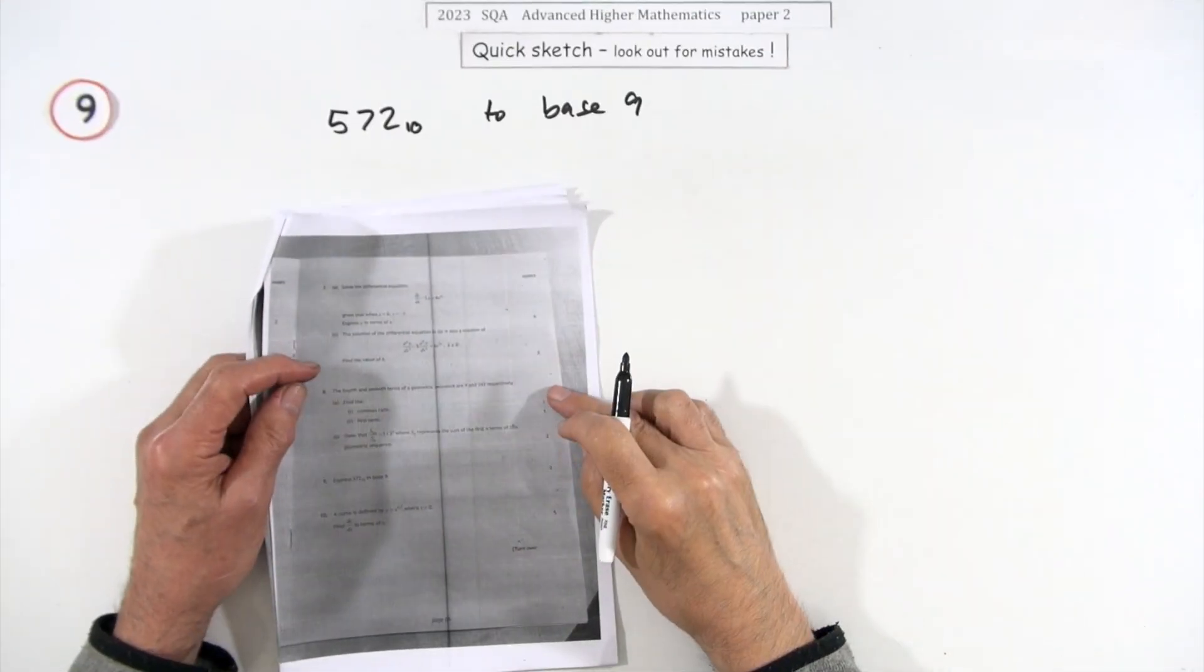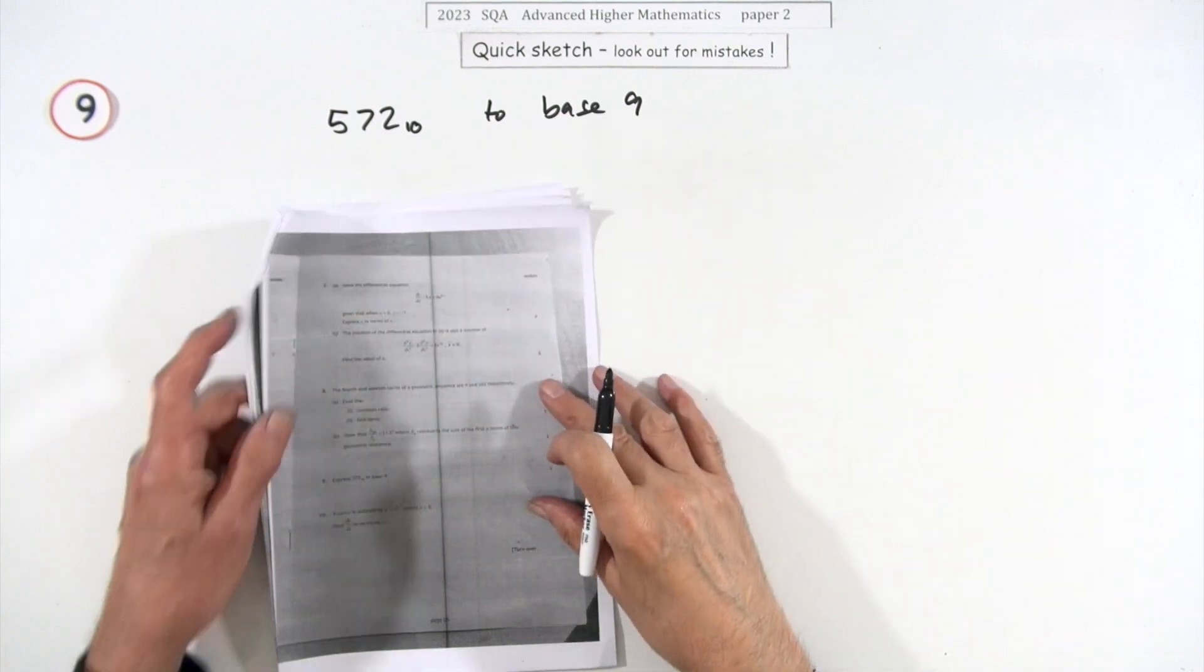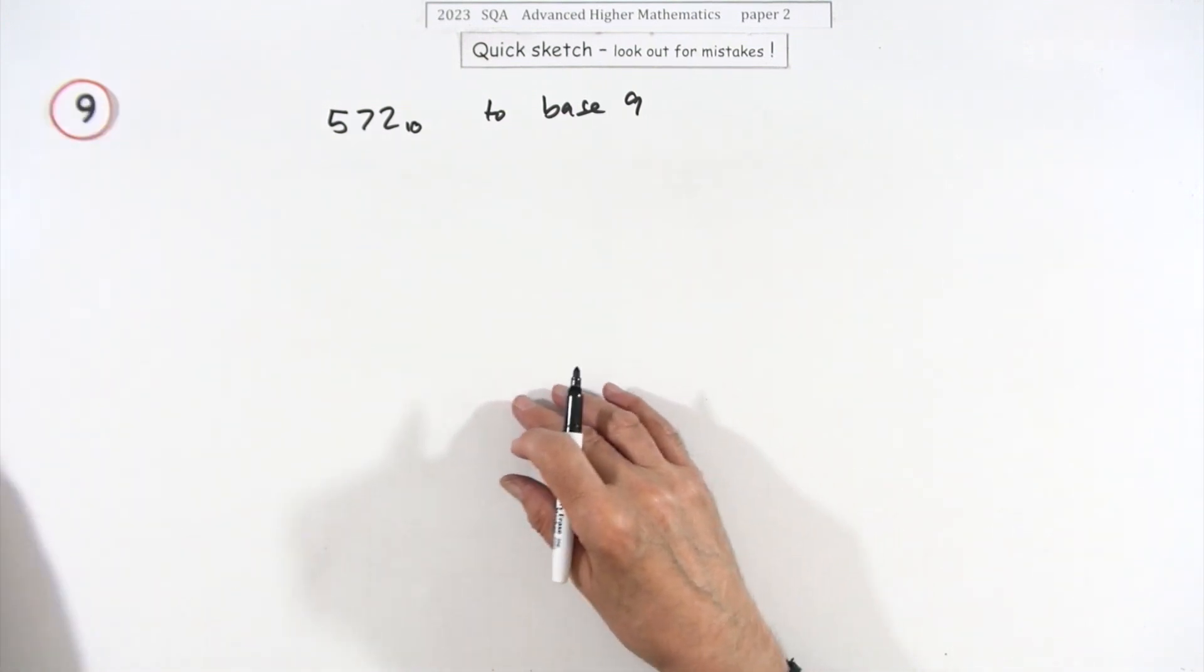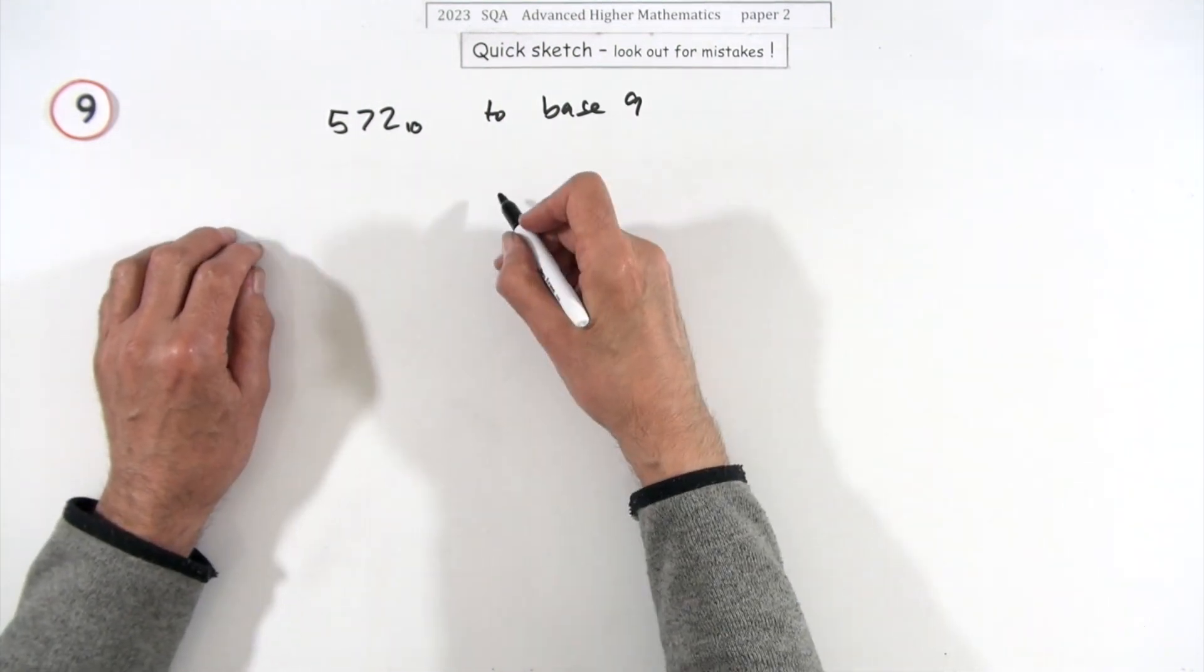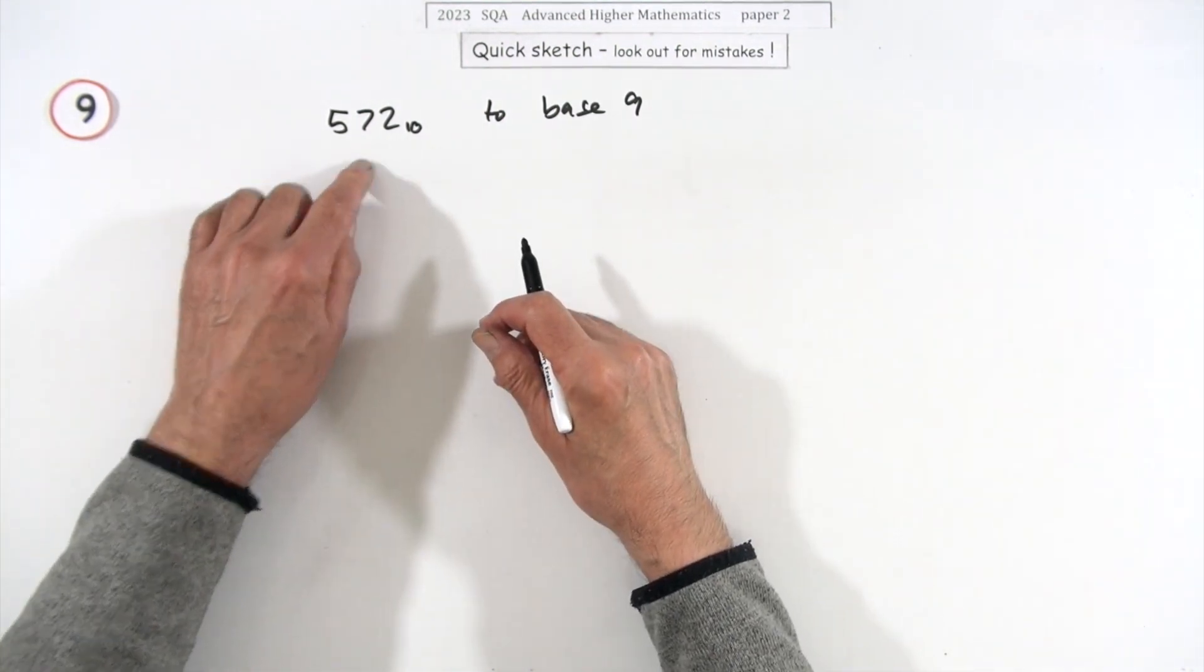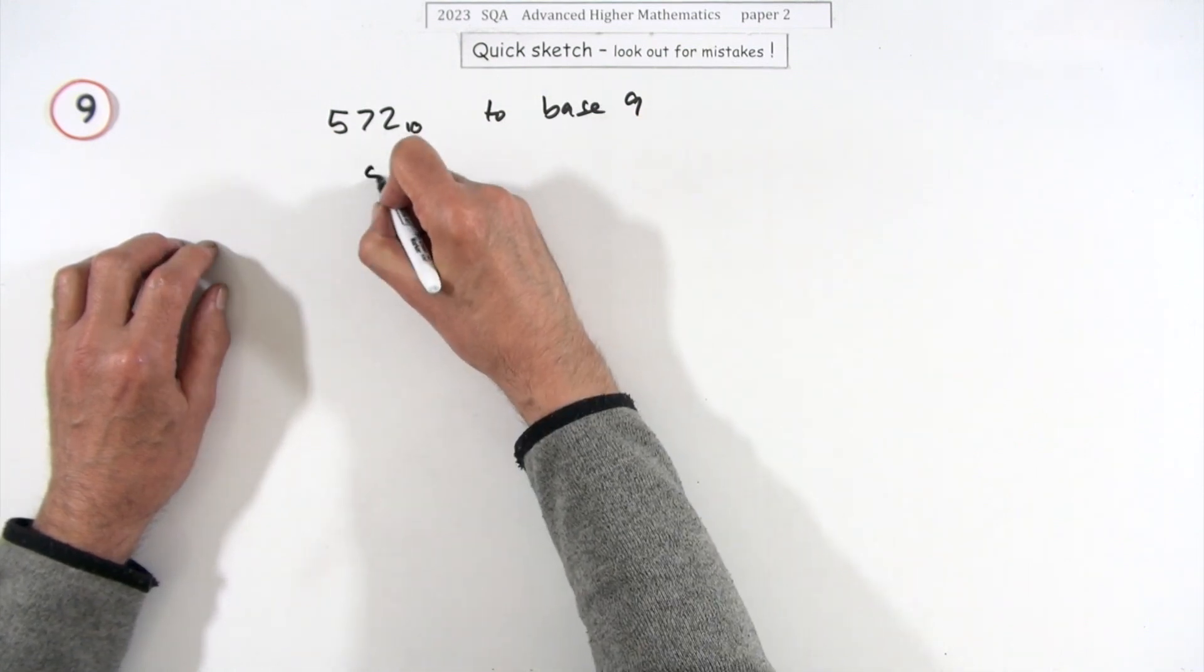Number 9 from paper 2, the 2023 Advanced Higher, two-mark question. It's just change of number base. There may well be other techniques that you can use - I've seen things involving the Euclidean algorithm - but it seems that it's just put them into piles of nine. It doesn't say use a particular technique.